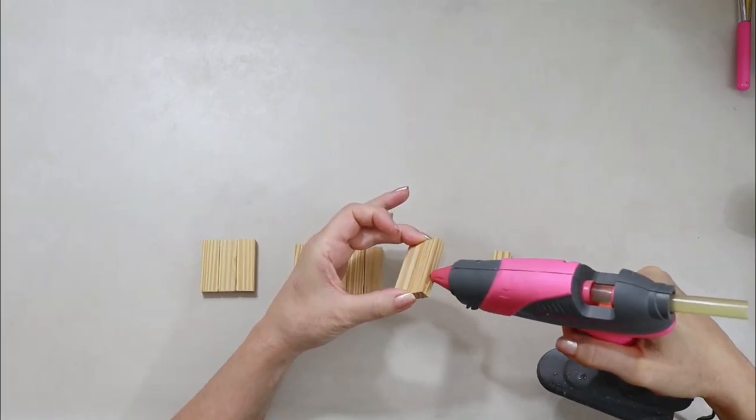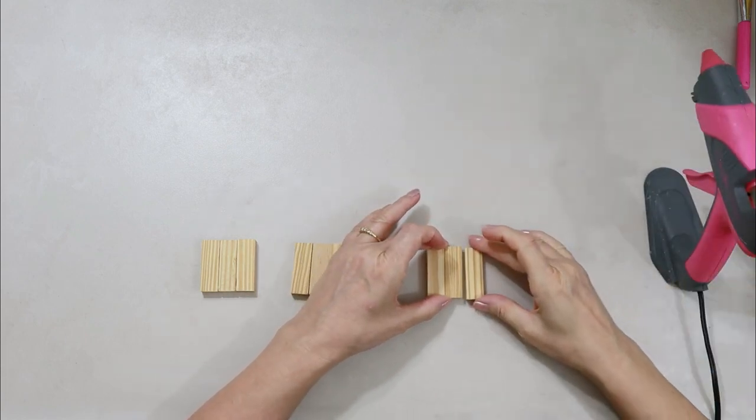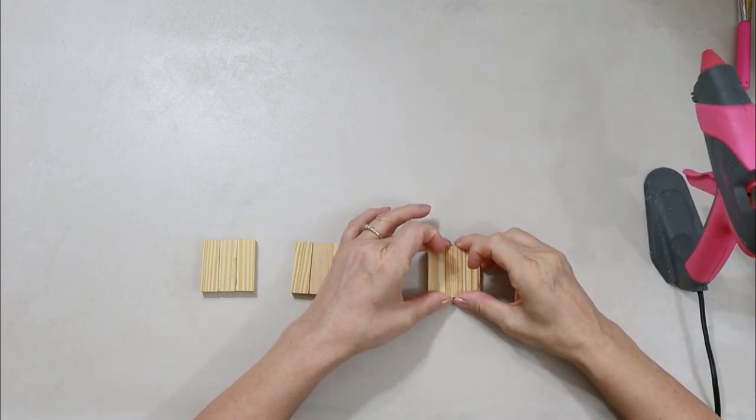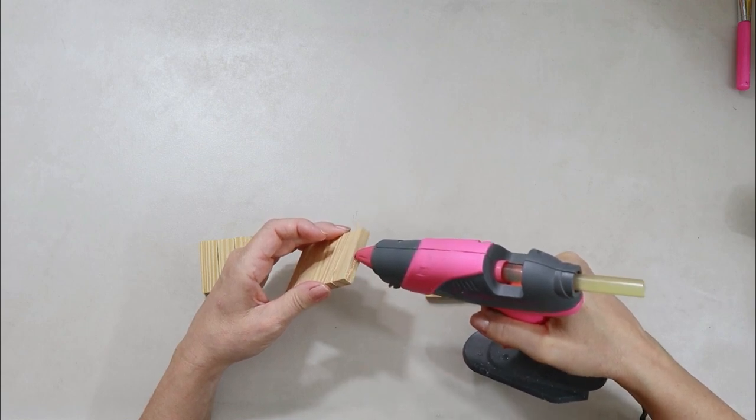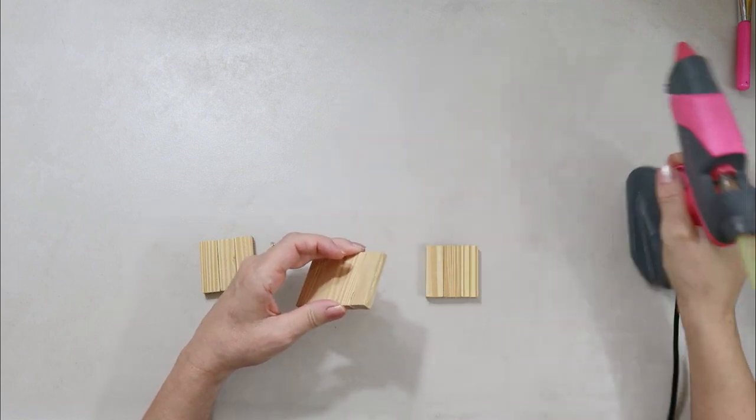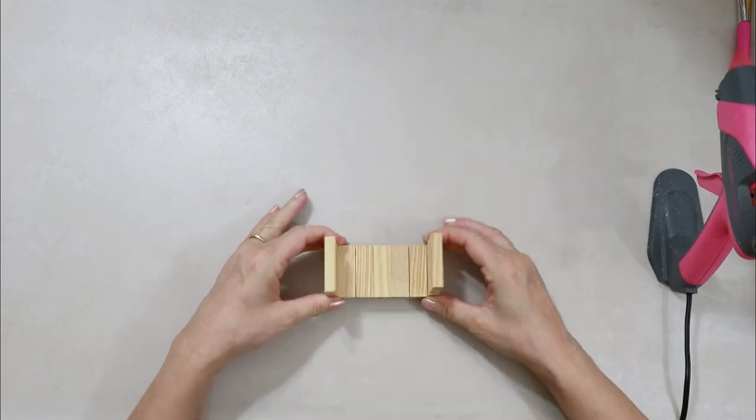So I started by gluing a set of three together and a set of four. You'll see the three on the left, and I'm just finishing up the three on the right, and then there was one in the middle that was four. Now I'm going to glue those together like this.